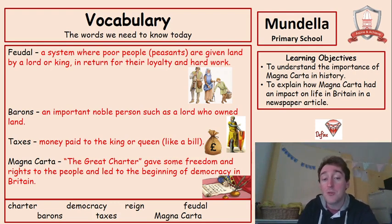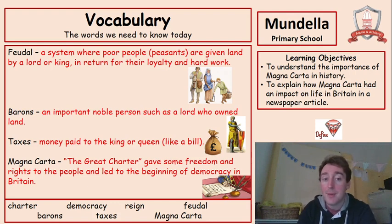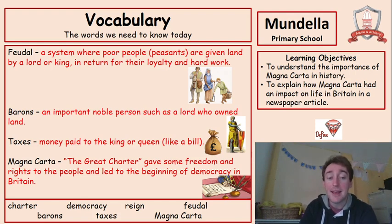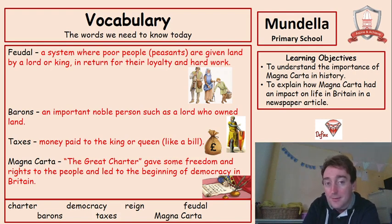Barons are important noble people who own a large amount of land. They sometimes give a bit of land to a peasant who then farms and makes their money. Some lords were barons as well. Taxes — we looked at that last time — is money paid to the king or queen, like a bill that we have to pay today. And Magna Carta, the main thing we're learning about today, is Latin for the Great Charter. It gave some freedom and rights to the people and led to the beginning of freedom and democracy in Britain. Pause the video now and get your own definitions down for those.